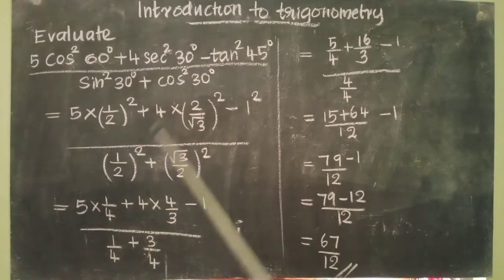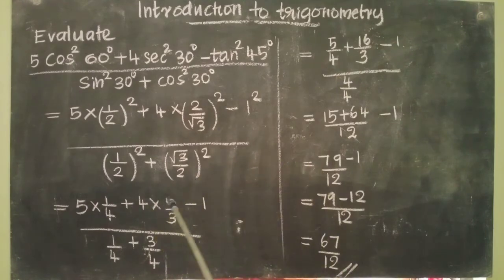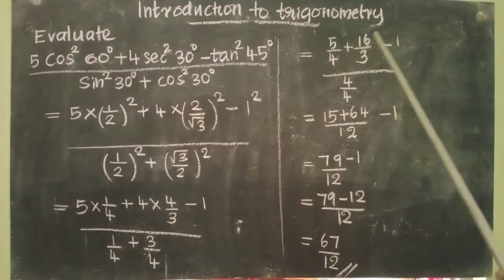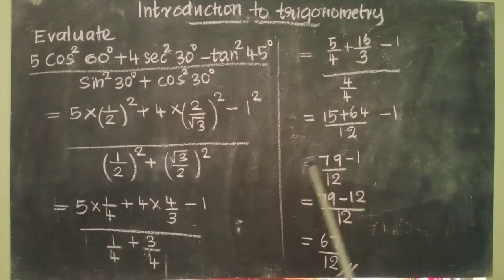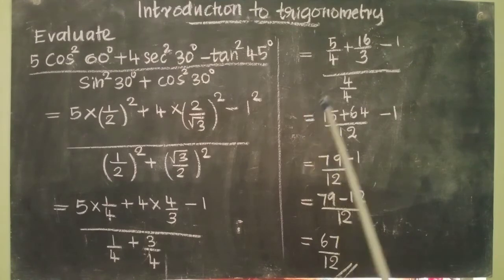5 × 1/4 is 5/4. 4 × 4/3 is 16/3. For 1/4 + 3/4, you can see same denominator, so that equals 4/4.